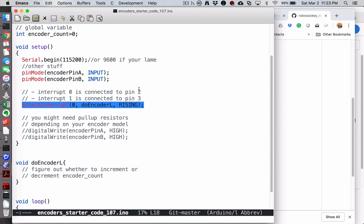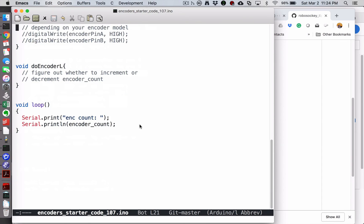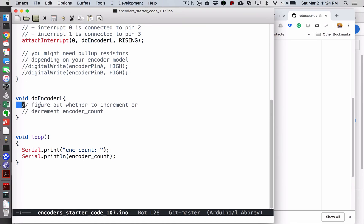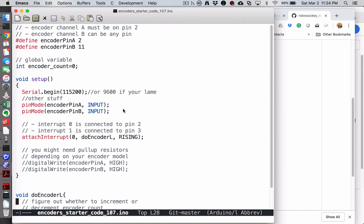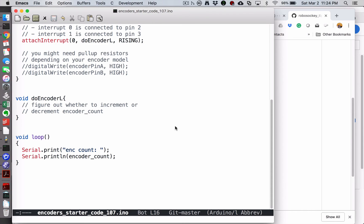Interrupt zero is pin two. Interrupt one is pin three, and you'll need that one to do the encoder on the other wheel if that's what you're doing. You'll need to write your own doEncoder function. Figure out what you need to do in here to either increment or decrement the global variable encoder_count.